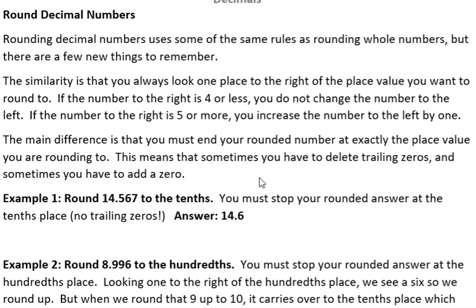The main difference is that you must end your rounded number at exactly the place value you're rounding to. This means that sometimes you have to delete trailing zeros, and sometimes you have to add a zero.